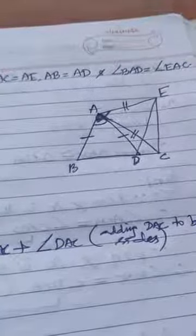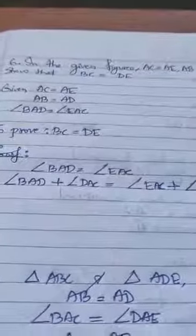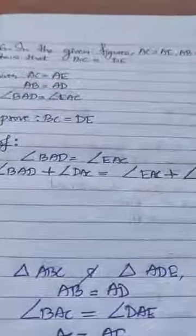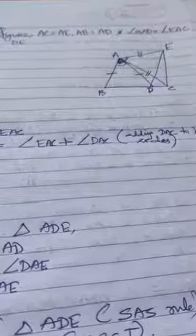Now, to prove BC equal to DE. What is BC and DE? They are sides of triangles, and we cannot prove sides directly. We don't have any fixed rule for sides. They come only when there is some triangle congruency.